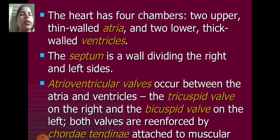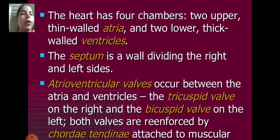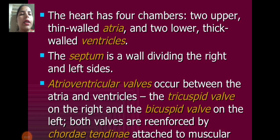The heart has four chambers: two upper thin-walled atria and two lower thick-walled ventricles. The septum is a wall dividing the right and left sides. Atrioventricular walls occur between the atria and ventricles. The tricuspid valve is on the right and the bicuspid valve is on the left. Both valves are reinforced by the chordae tendineae attached to the muscles.